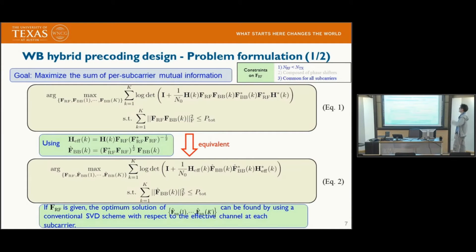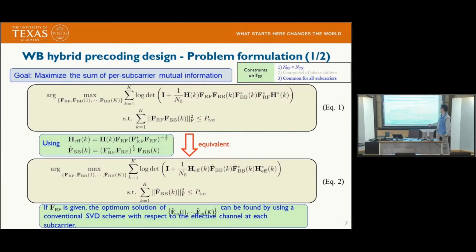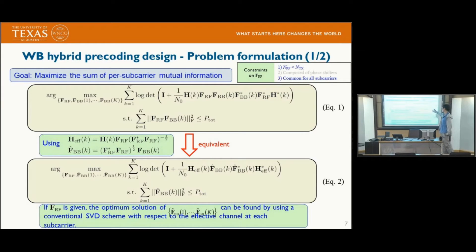Now let's think about the wideband hybrid pre-coding design. Our goal is to maximize the sum of the per-subcarrier mutual information. However, the coupling between the analog pre-coder and the baseband pre-coder makes this problem difficult to solve. Using a simple trick, optimization problem equation one can be reformulated as the equivalent equation two.